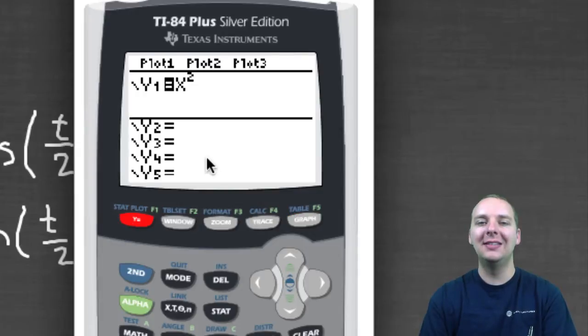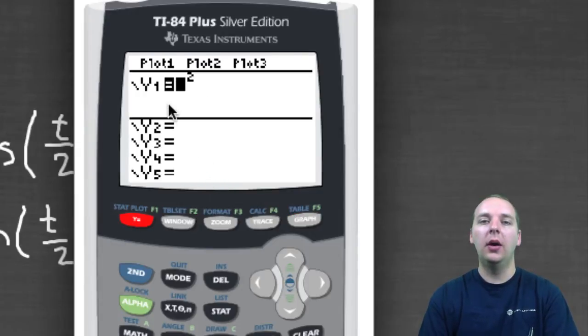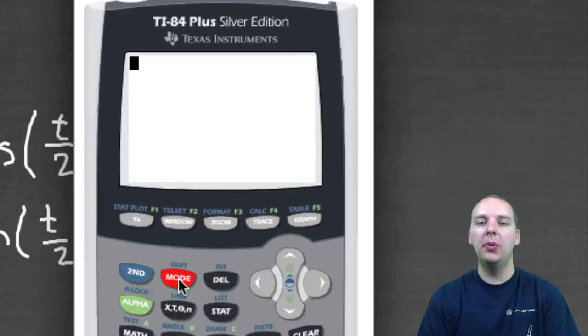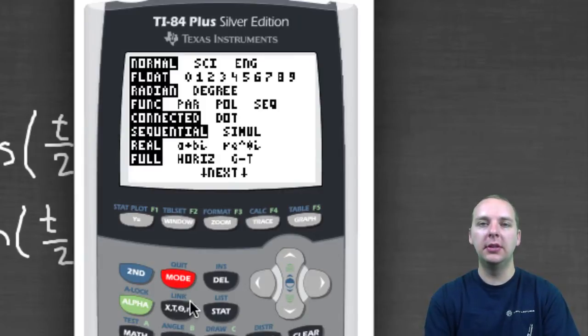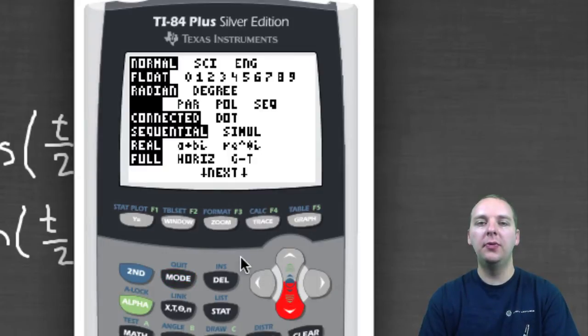But the problem is that this is in rectangular mode, or function mode rather, that has X's and Y's. So here's what we're going to do. Go back to your home screen, and change the mode, push the mode button, which is at the top of your calculator, and on the fourth row, change the mode from FUNC, that's function mode, to PAR, which is parametric mode.